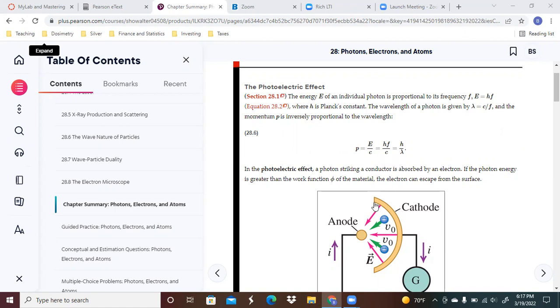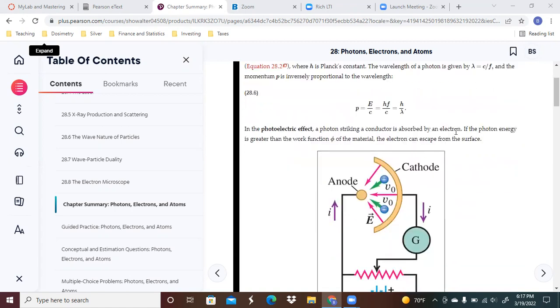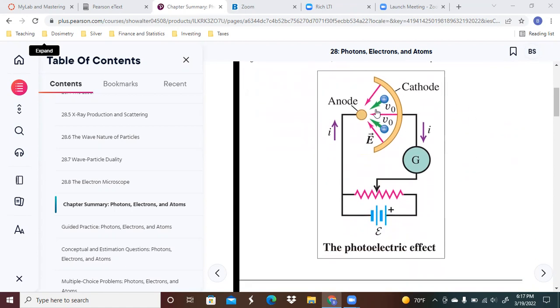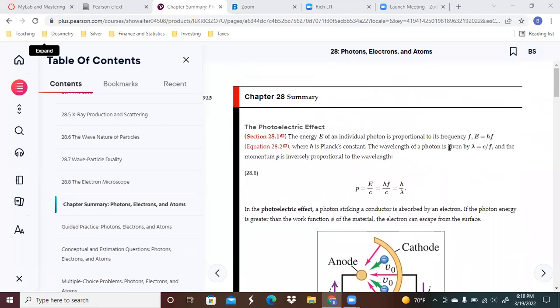With the photoelectric effect, which is what we'll be looking at, light striking a conductor is absorbed by an electron. And if the photon energy is greater than the work function of the material, the electron can escape from the surface. This is a picture of what we will be looking at. Keep in mind, this is the galvanometer that measures the current as it comes through. This is going to be a resistor and the potential difference.